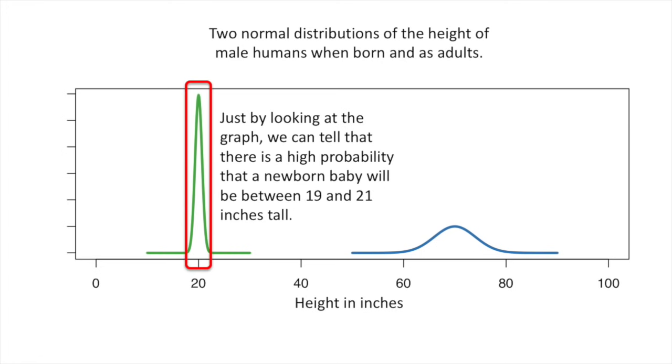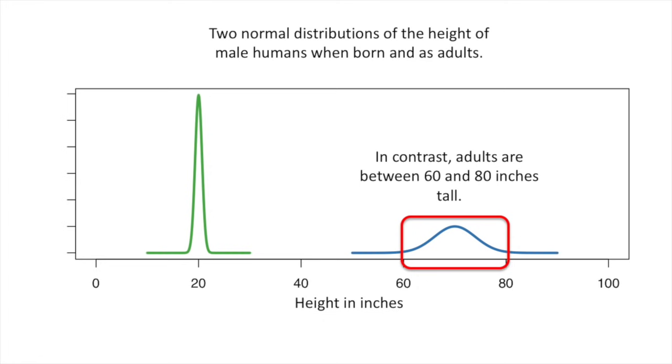Just by looking at the graph, we can tell there is a high probability that a newborn baby will be between 19 and 21 inches tall. In contrast, adults are between 60 and 80 inches tall.